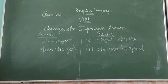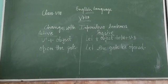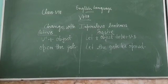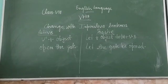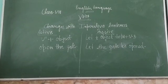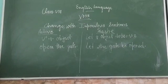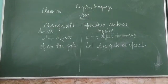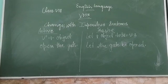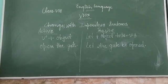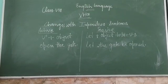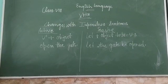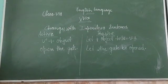If our sentence is imperative, like 'Open the gate,' then we use the formula: let + object + be + V3. In the active form it is 'Open the gate,' and in the passive form we say 'Let the gate be opened.' We always use the third form of the verb in the passive voice, so V1 goes into be + V3, and before the object we always use 'let.'